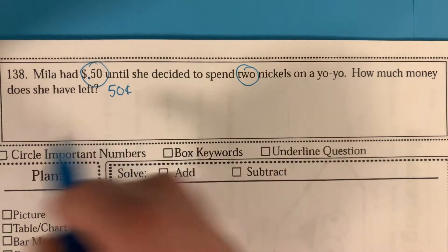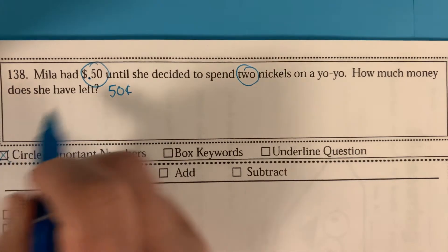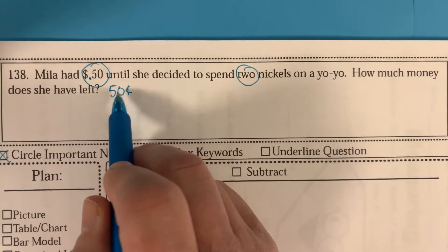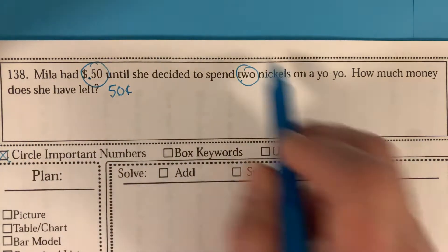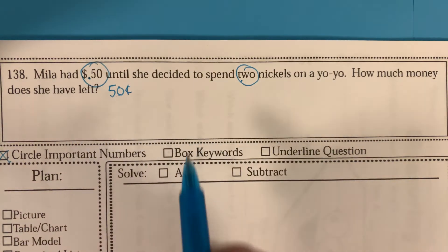All right, so we did circle the important numbers, but that's not gonna help us because we're not gonna be dealing with 50 cents and two. We need to make these numbers so that they're able to be worked with together.